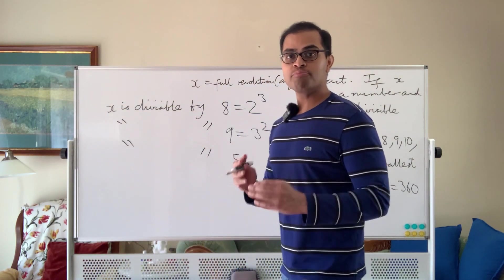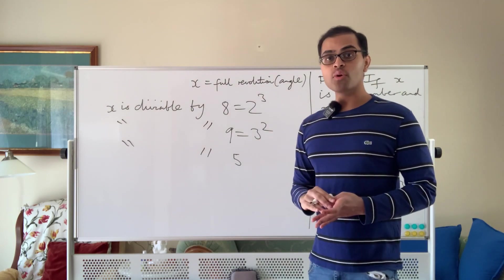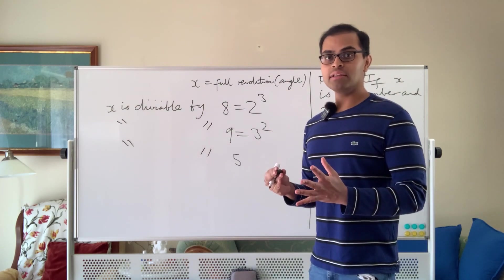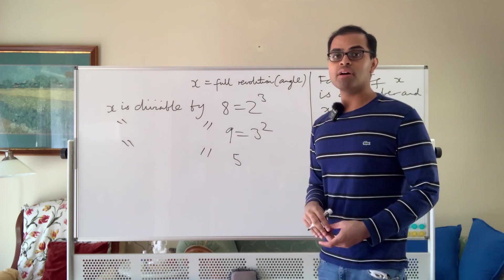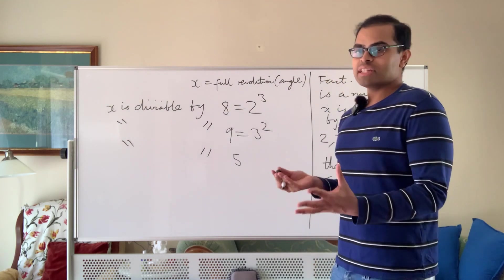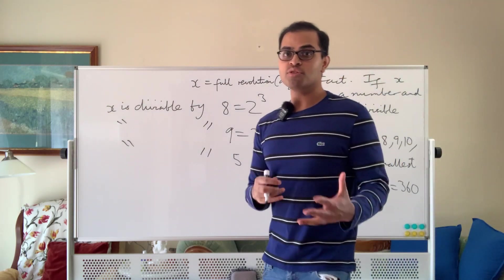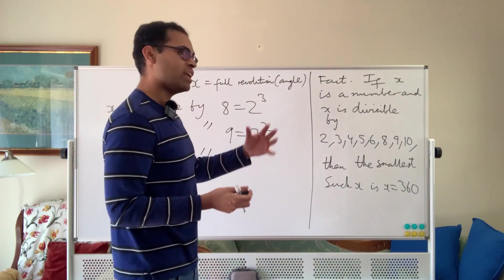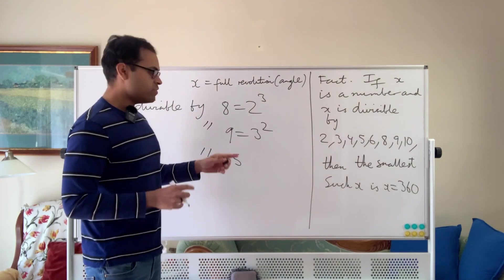Now, if you have a bunch of powers of prime numbers, like 2 cubed, 3 squared, 5, they don't have any common divisor. Because there's no number that can go into 2 cubed and 3 squared, because if it's a prime number, it goes into 2 cubed or 3 squared. If it goes into 2 cubed, it has to be 2. If it goes into 3 squared, it has to be 3. It can't be both.